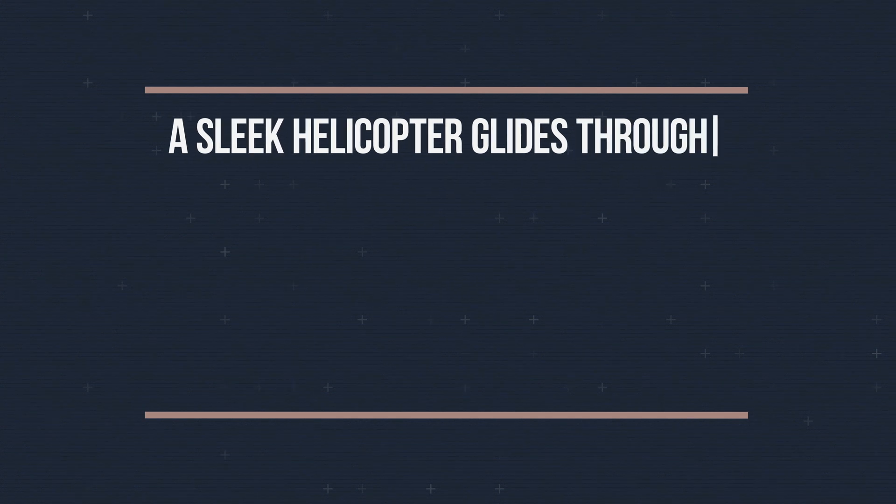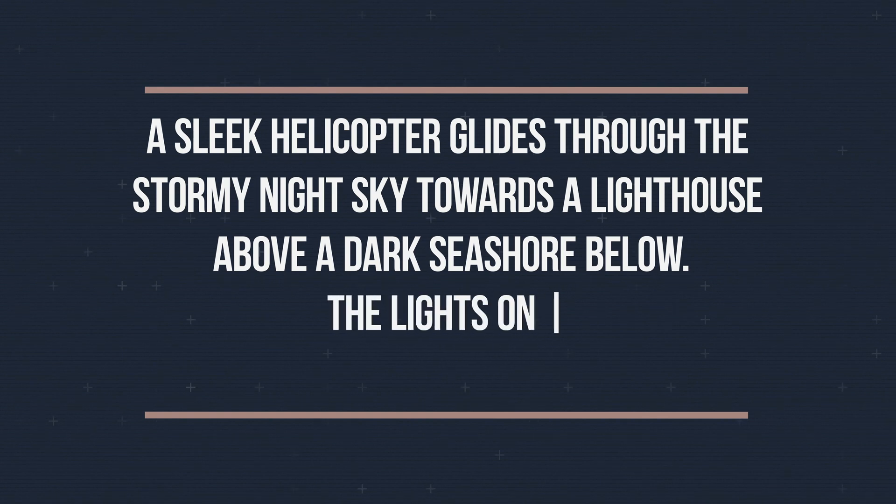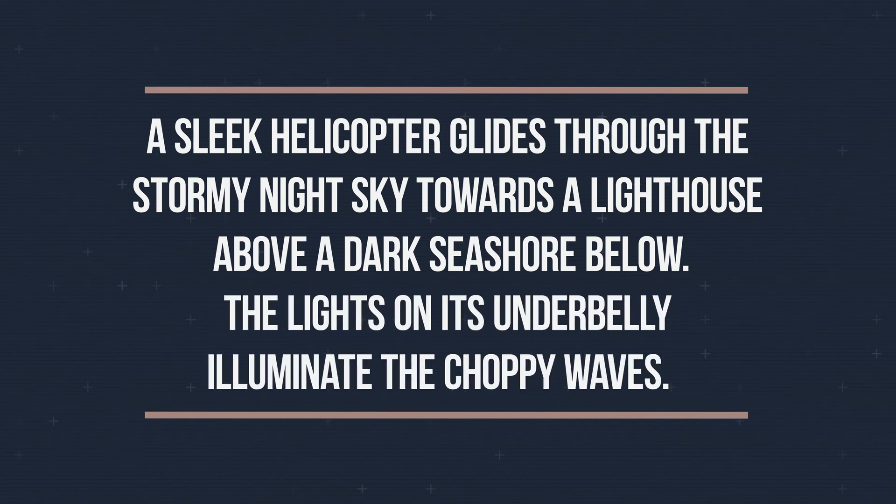Here's the text prompt I used: 'A sleek helicopter glides through the stormy night sky towards a lighthouse above a dark seashore below. The lights on its underbelly illuminate the choppy waves.' This description comes from a storyboard I used to create a short trailer — just to provide some context. Sure, I can refine this prompt to make it richer and more descriptive, and there are even AI tools designed to help with that.